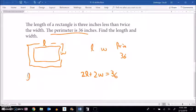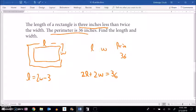What else do I know? The length is three inches less, three inches less, so it's going to be something minus three, twice the width. Alright, so L = 2W - 3.